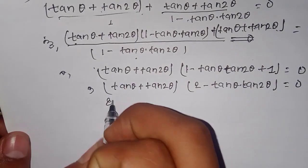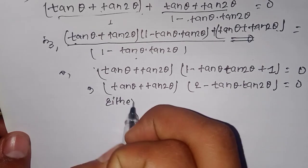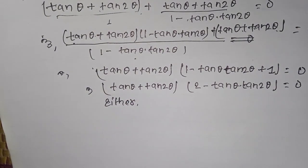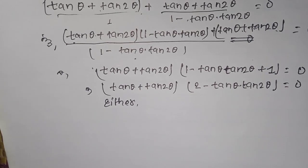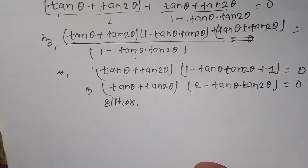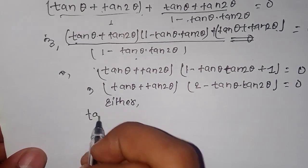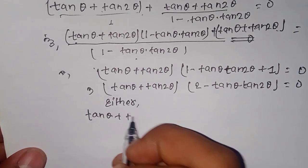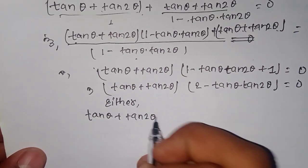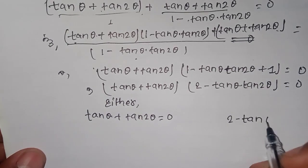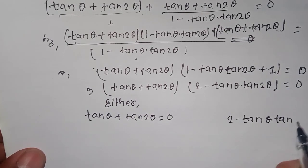Using the formula, we get two conditions: tan(theta) plus tan(2-theta) equal to zero, and similarly, one minus tan(theta) into tan(2-theta) equal to zero.